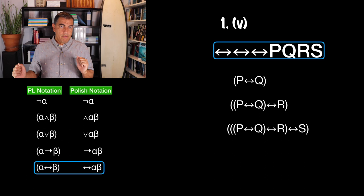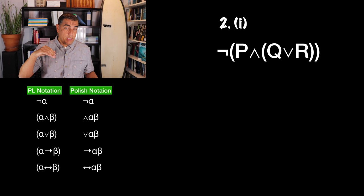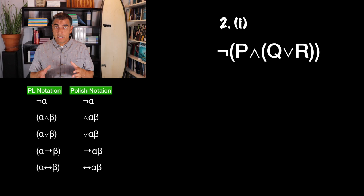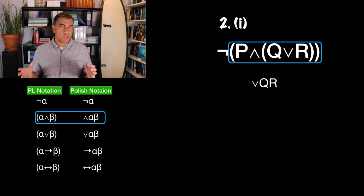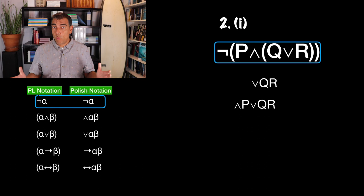Problem two wants us to take stuff written in the notation we're using in this book and translate it into Polish notation. For number one, I see the inner parentheses Q or R. So I write or Q R. Then I notice that's the second conjunct of the conjunction P and Q or R. So I write and P or Q R. Finally, that whole thing has been negated, so I throw a negation symbol at the very front: not and P or Q R.